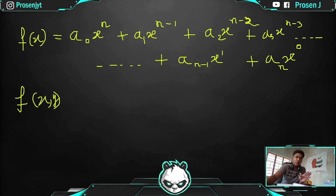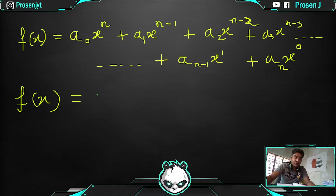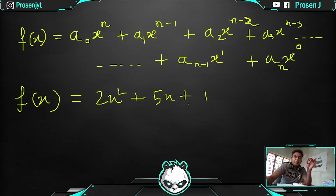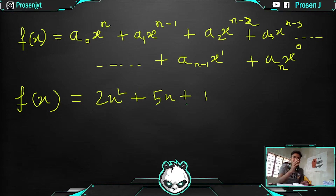So f(x) — if we write any equation like 2x² + 5x + 1 — as you can see, this total equation is right now depending only on x. If you change the value of x, the value of the equation will change. So we can easily say it is a function of x, and that is why I am writing f(x) equal to this.